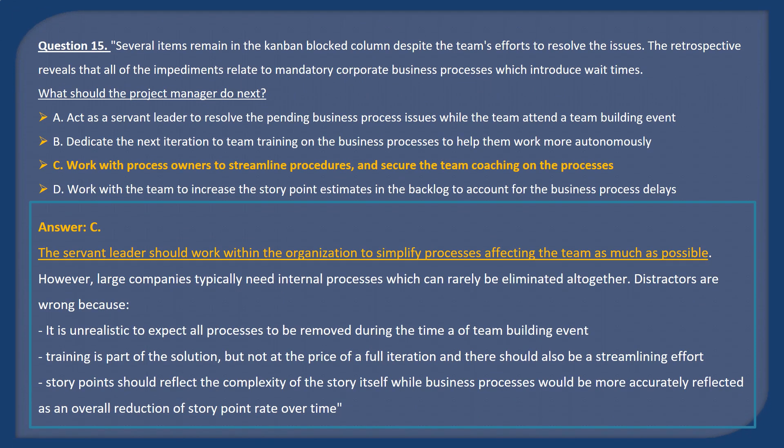Answer C. The servant leader should work within the organization to simplify processes affecting the team as much as possible. However, large companies typically need internal processes which can rarely be eliminated altogether. Distractors are wrong because it is unrealistic to expect all processes to be removed during the time of a team building event. Training is part of the solution but not at the price of a full iteration, and there should also be a streamlining effort. Story points should reflect the complexity of the story itself, while business processes would be more accurately reflected as an overall reduction of story point rate over time.